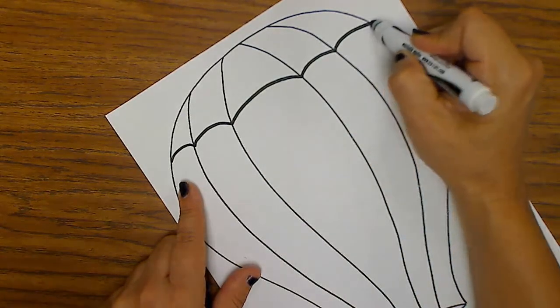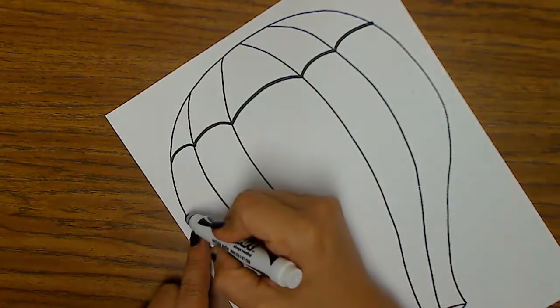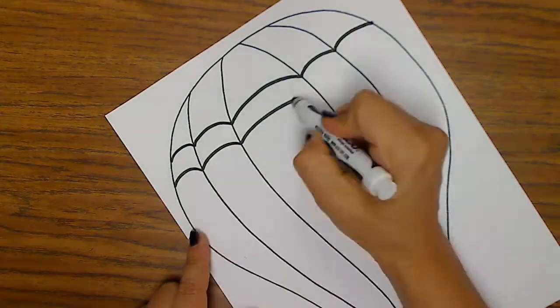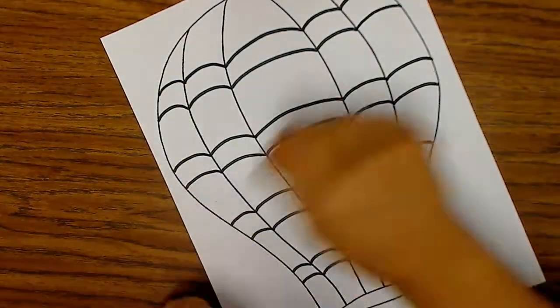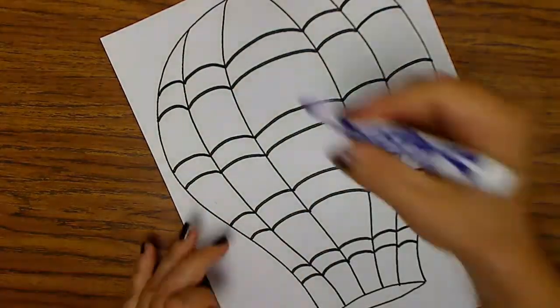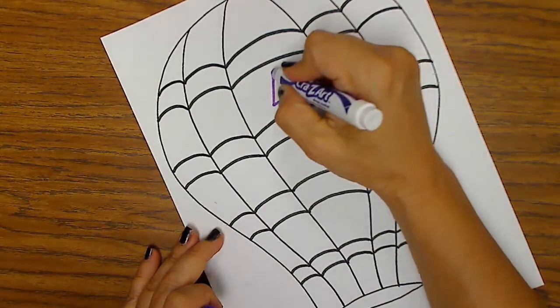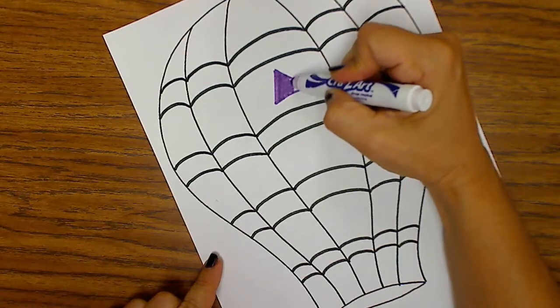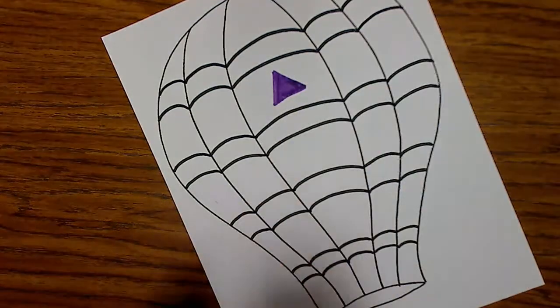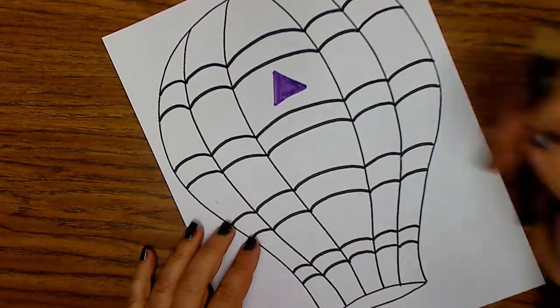Then make two more rainbows, coming down a little bit depending on how far you want it. Then you're just going to color it. If you're using markers, don't color big areas with the marker, but you can make shapes like triangles and color those with a marker so you're not wasting it, and then the background you can color with a colored pencil or crayon.